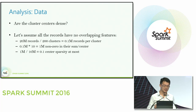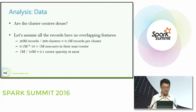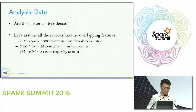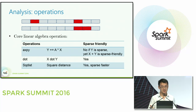How can we optimize this? Are cluster centers necessarily dense? Let's assume the worst case — all 20 million records have no overlapping features. With 200 clusters, each cluster has 0.1 million records. With 10 items per record, there are at most 1 million non-zero elements in a sum vector of 10 million dimensions, giving at most 0.1 density. So cluster centers can actually be sparse.